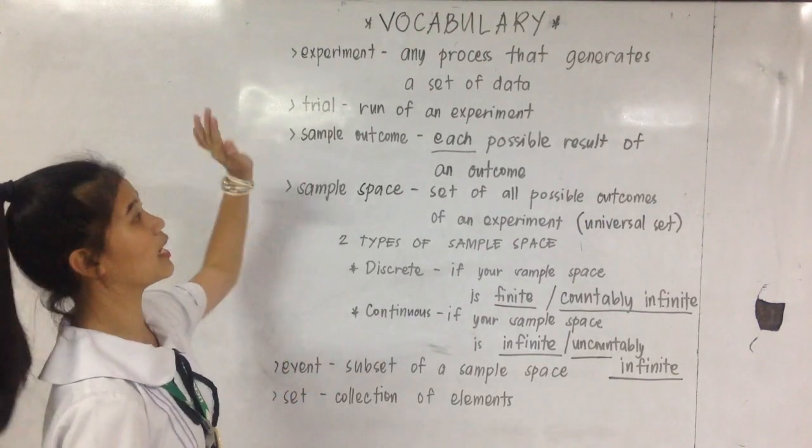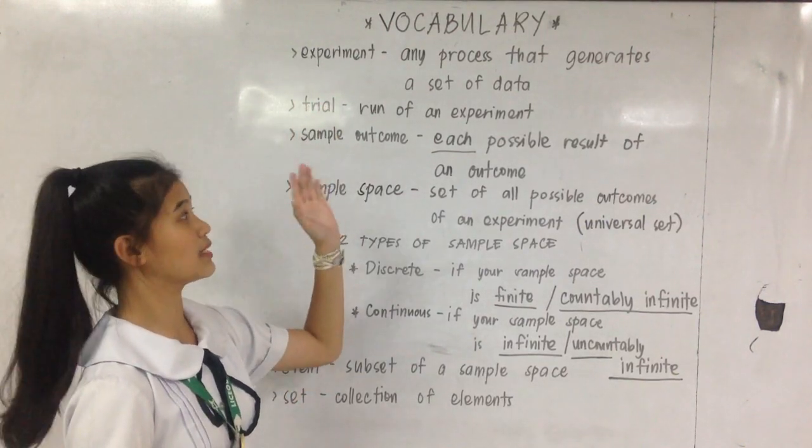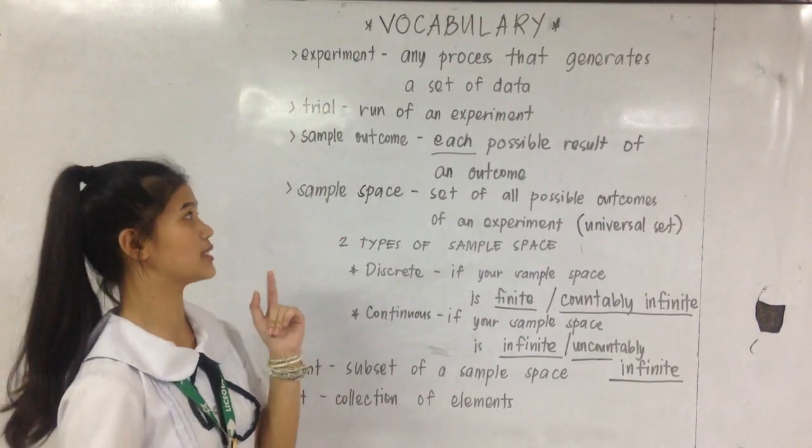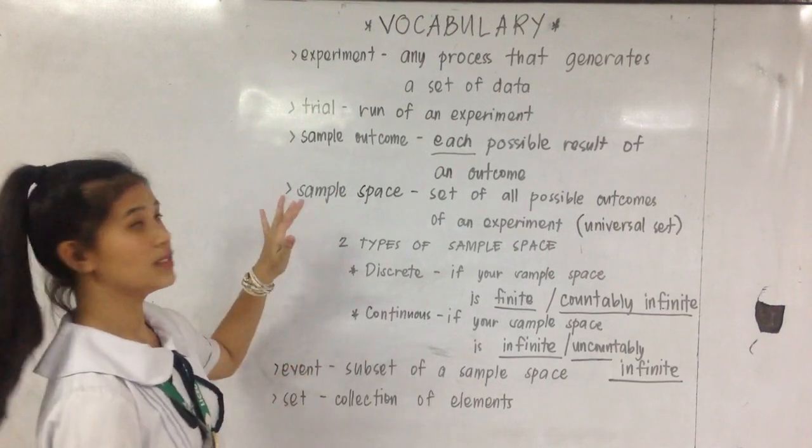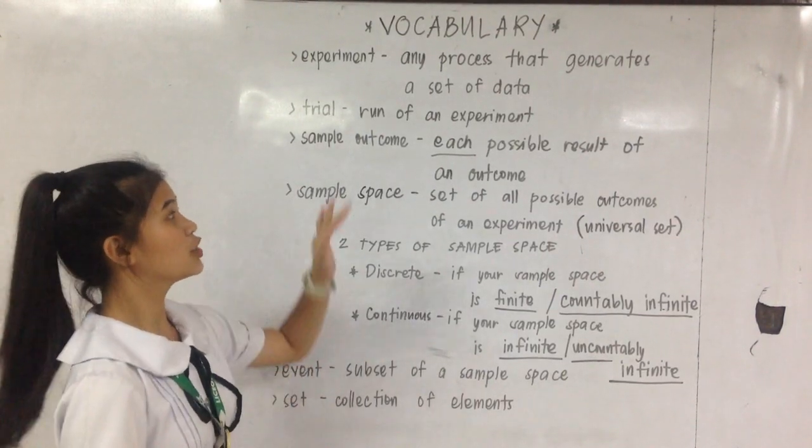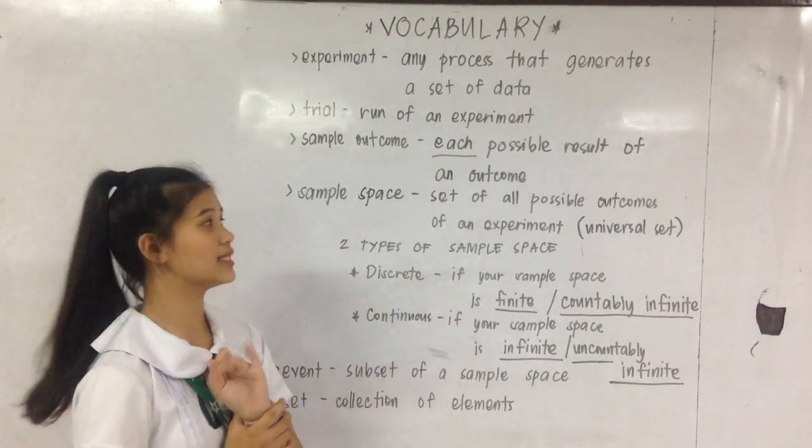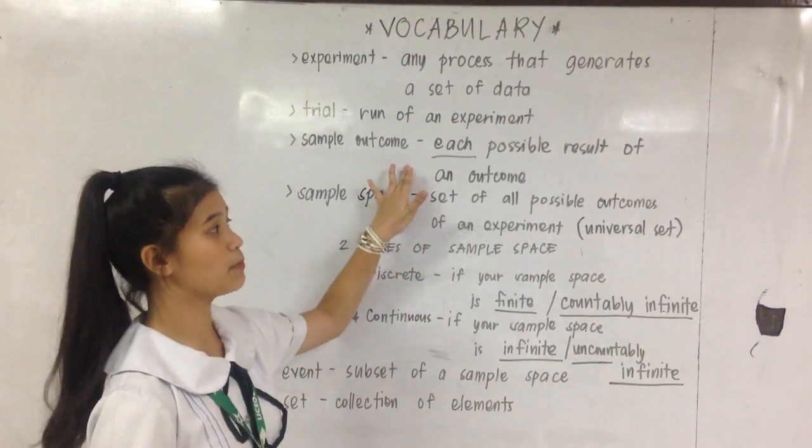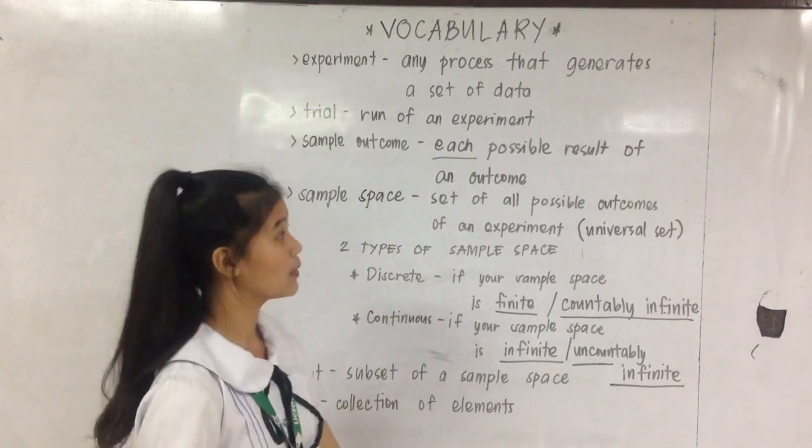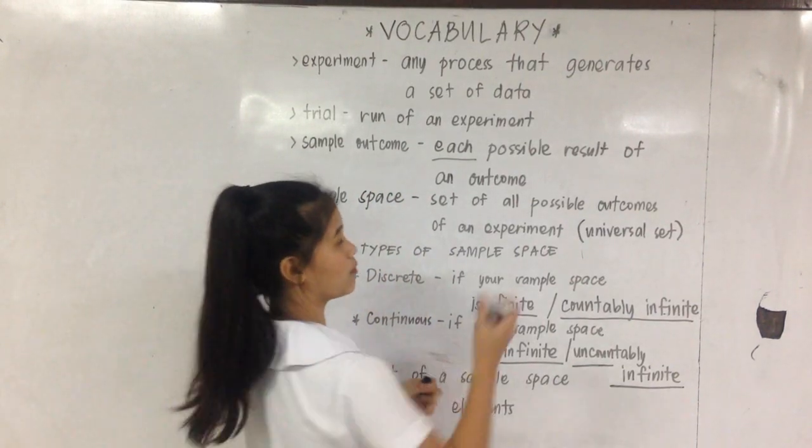First, let's start with experiment. Experiment is any process that generates a set of data. Second is a trial. Trial is the run of an experiment. Third is the sample outcome, each possible result of an outcome.